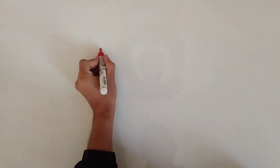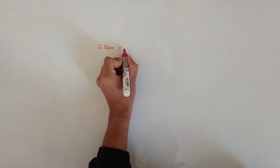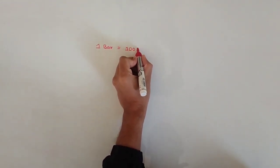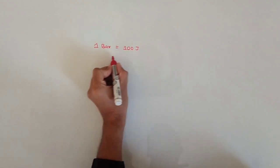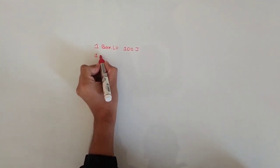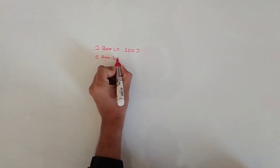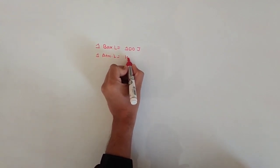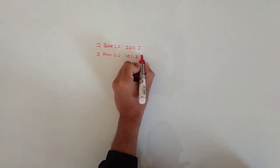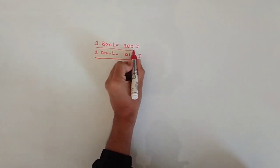Today we will be talking about unit conversion: 1 bar·litre is equal to 100 joules, and 1 atmosphere·litre is equal to 101.3 joules. We will now see how these conversions are derived.